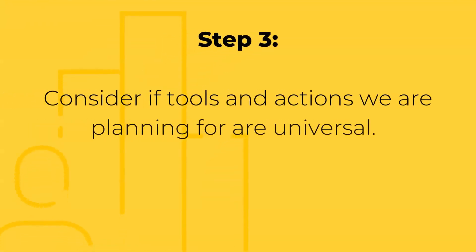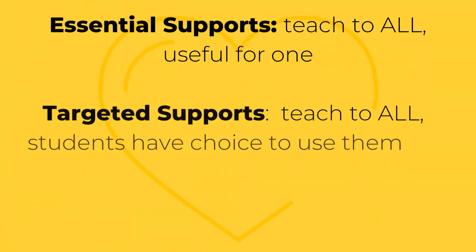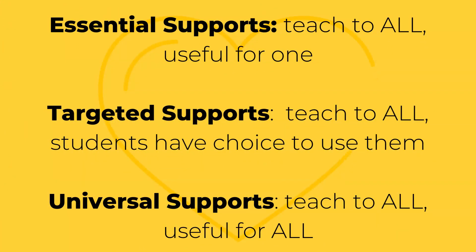Step 3: Consider if the tools and actions we are planning for are universal. How do we know what makes supports and strategies universal? Supports can be considered essential when we teach them to all students, but they are only used for one — this might happen at a Tier 3 level of support. Supports can be considered targeted when we teach them to all students and there is choice whether they use them or not — this might be the case in a Tier 2 level of support.